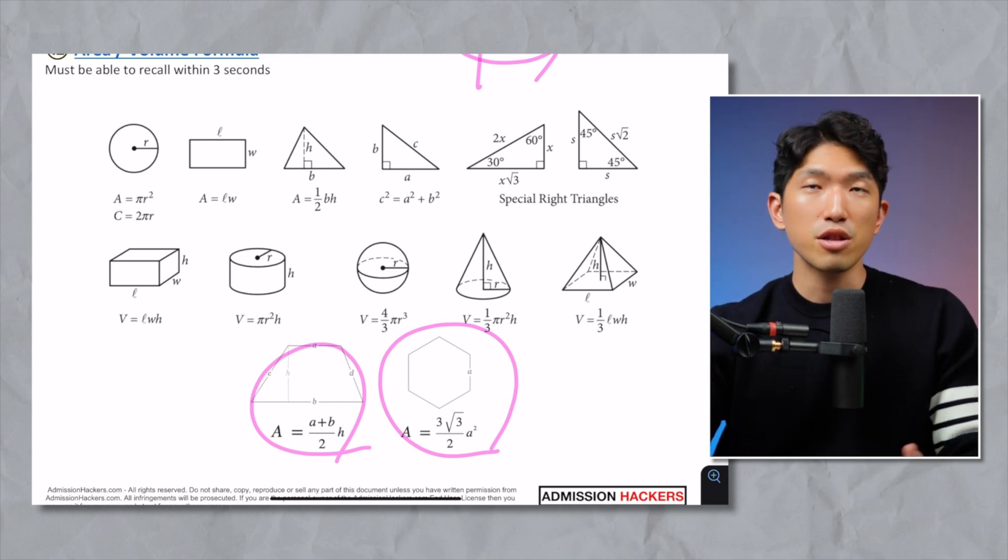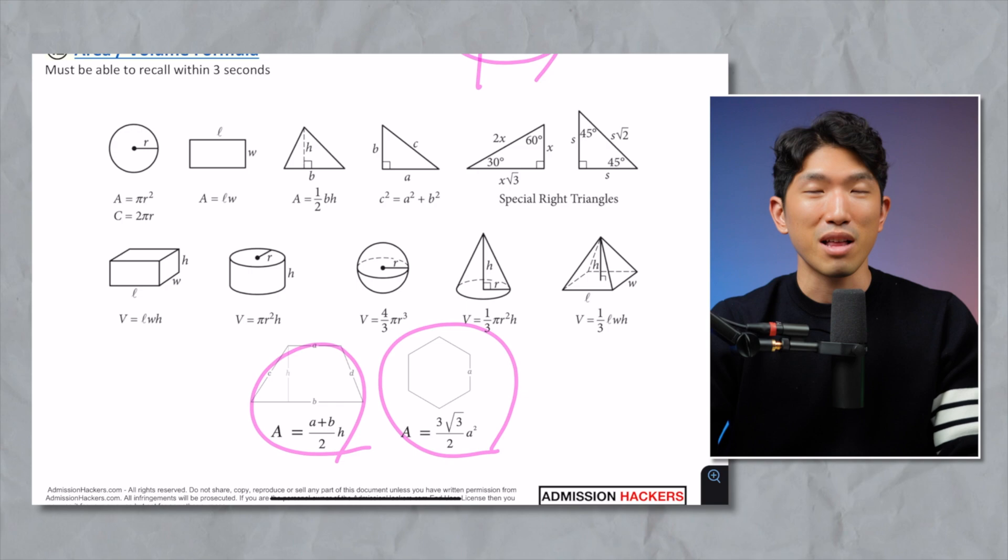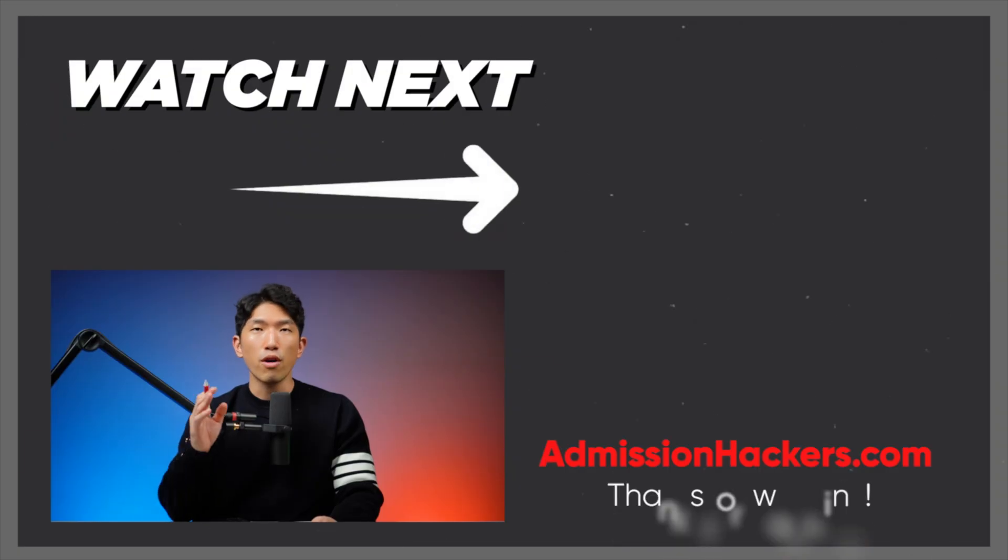And that's pretty much every formula you need to know. If you got everything in here, you should be good. You're not going to miss any question because you forgot what the formula was. Up next, let's go over every single rule you need to know for the SAT. That's a more important thing. Make sure you get these straightened out. If you have any questions, leave in the comment down below, and I'll see you in the next lecture.